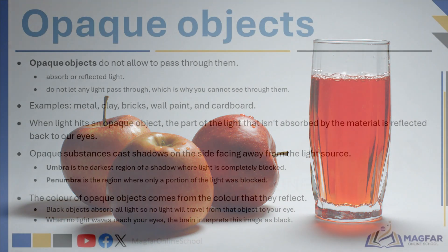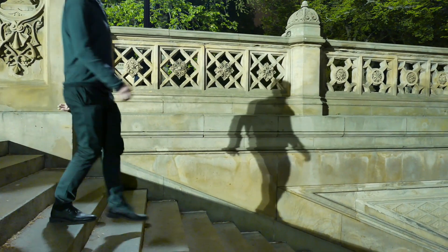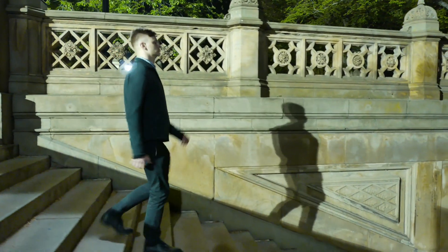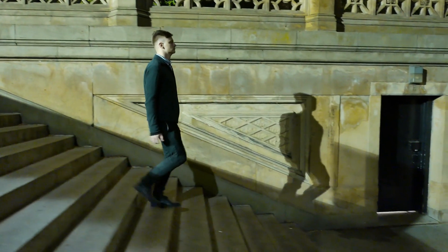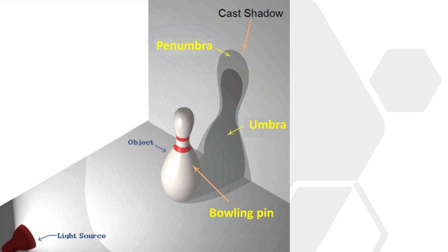Opaque substances cast shadows on the side facing away from the light source. When light is absorbed, it is unable to travel any further once it reaches the opaque object. The umbra is the darkest region of a shadow where light is completely blocked. Surrounding the umbra is the penumbra, a lighter shadow where only a portion of the light is blocked, creating a softer, less defined shadow.